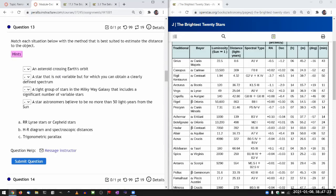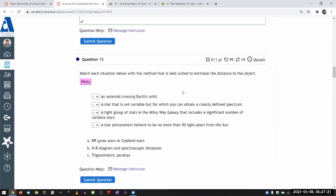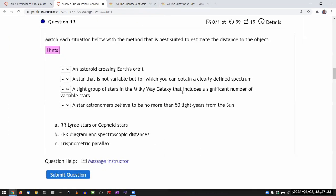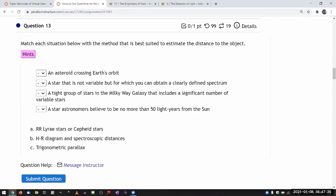It says, match each situation below with a method that is best suited to estimate distance to the object. Let me go back to my original thing. Estimate distance to the object.